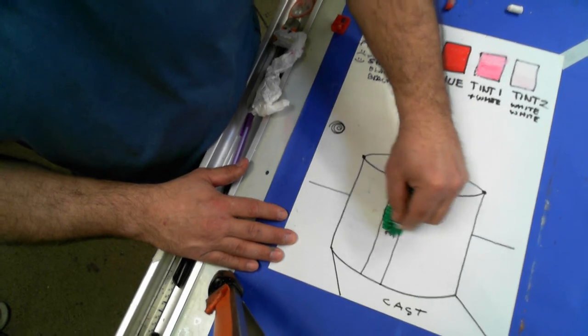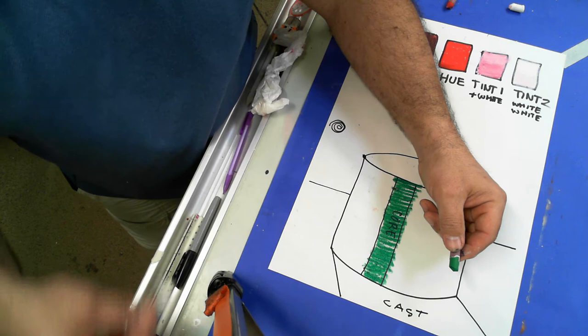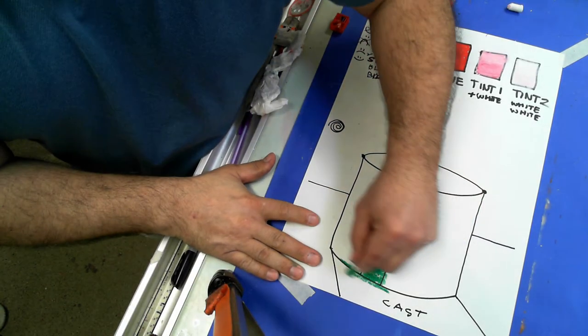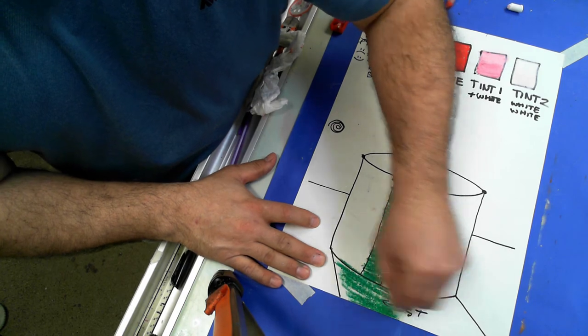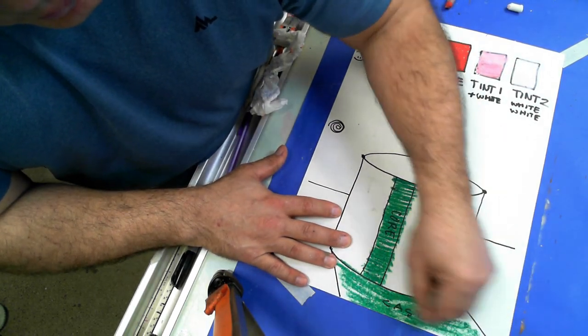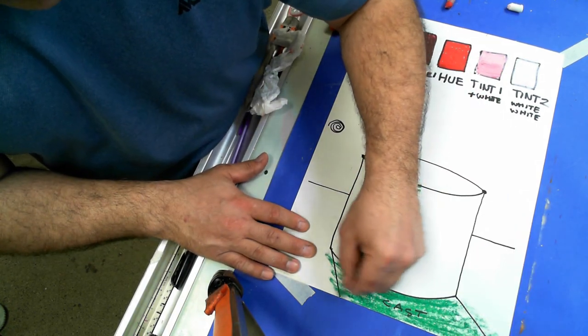My cast shadow is just as dark as my core, so I'm going to put some green, not all the way up to the edge, but I'm going to put some green right like that. And then I'm going to go lighter with it along the edge because it gets fuzzy.